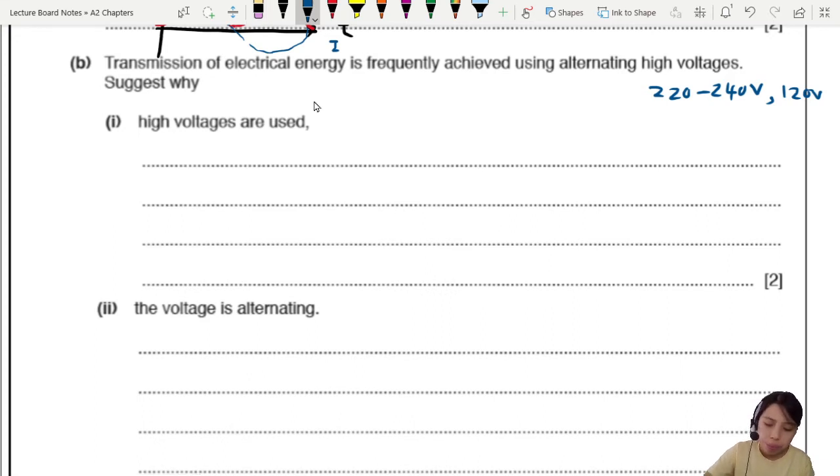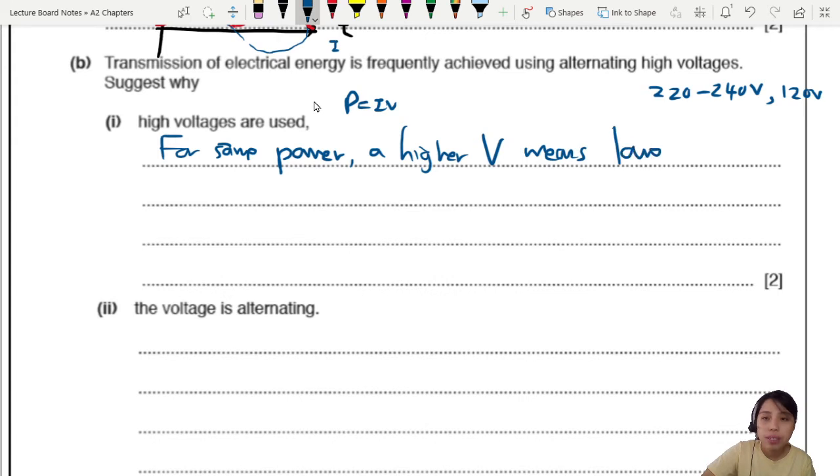First thing, we use high voltage because it means a lower current. Because remember, P equals to IV. So if you have the same power that you need to use in a house or system, for the same power, a higher voltage means a lower current when you're transmitting electrical energy. So you're transferring the same amount of energy, but if you use a high voltage, it means lower current. Let's say we want the same amount of energy transferred. If you make voltage very high, current has to be very low. So how is this advantageous? What does a large current do?